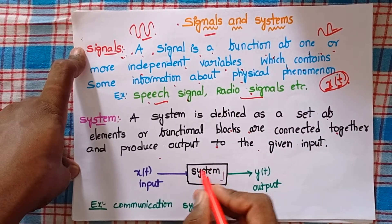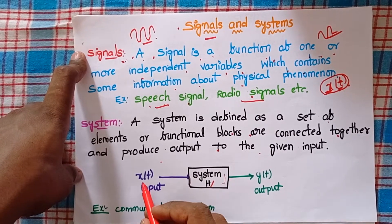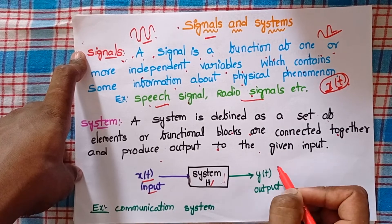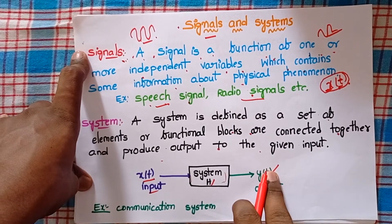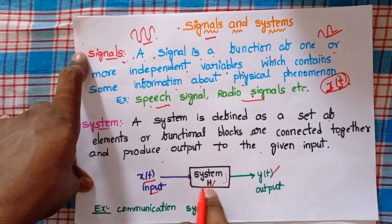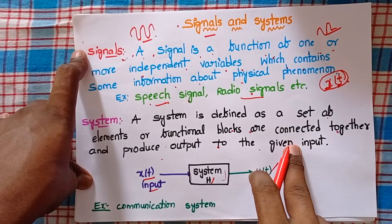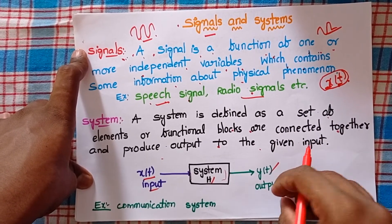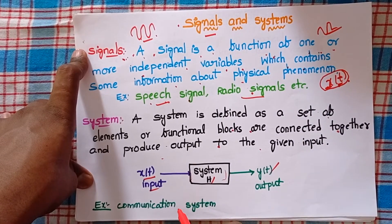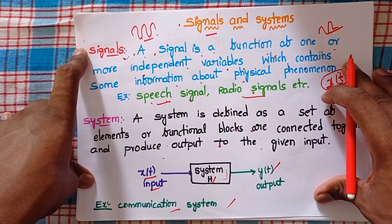Consider this block diagram — this block represents a system with transfer function H. The input provided to the system is x of t and the output is y of t. We have some relations for input and output. This is the block diagram representation of a system. Examples of systems include our mobile phones and telephones.